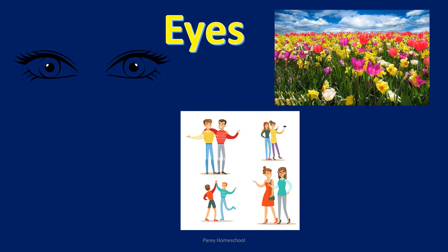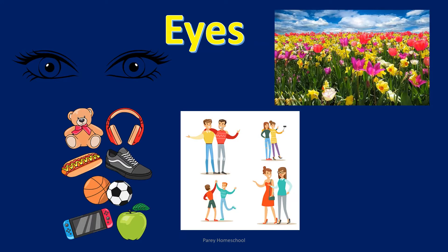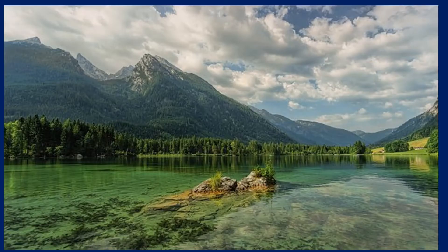Eyes. We use our eyes to see. When our eyes are open, they constantly take pictures of the world around us and send those pictures to our brain. Our brain stores those pictures so that in future we can remember the things we have seen. We can see different colors, things, people and places around us with the help of our eyes.